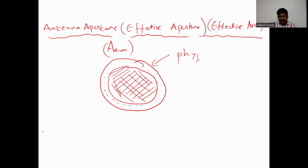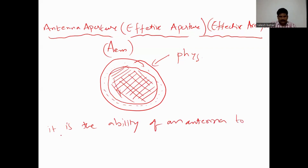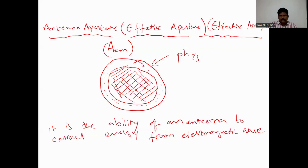So what is the definition of an effective aperture? The definition of an effective aperture area is: it is the ability of an antenna to extract energy from electromagnetic waves.